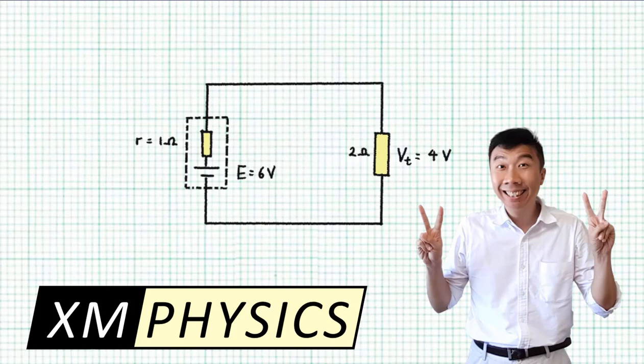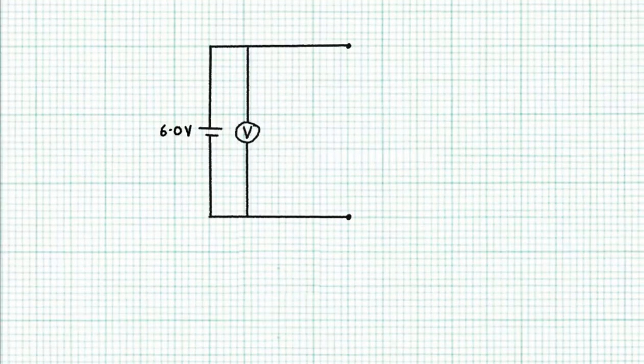Hello everyone, this is XMPhysics. So look here, I have a 6 volt battery and I connect a voltmeter across it and the voltmeter reads 6 volts. So no surprise here.